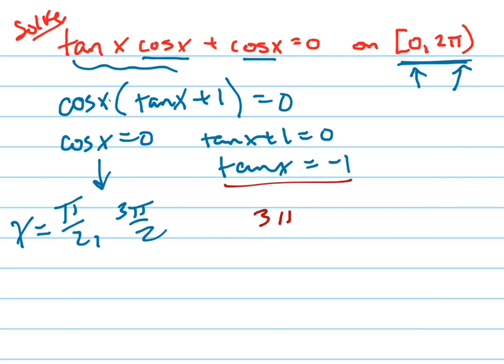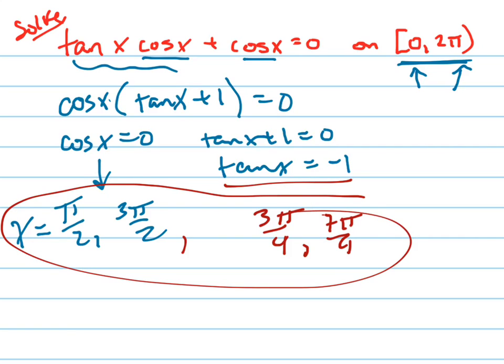So your answers are π over 2, 3π over 2, 3π over 4, 7π over 4. Those are your four answers right there. Check them by plugging them in. Use your store button. Plug them into this equation right here, and check all four of those pretty quickly, and you'll see that those are right.